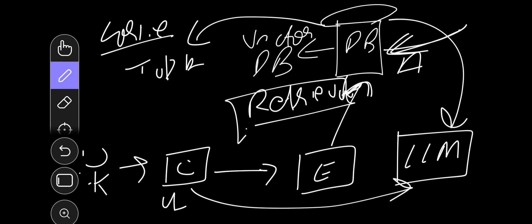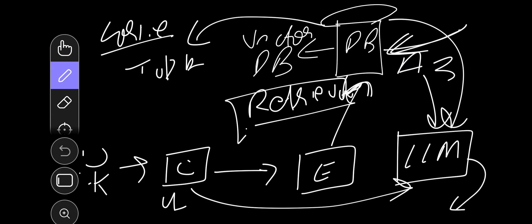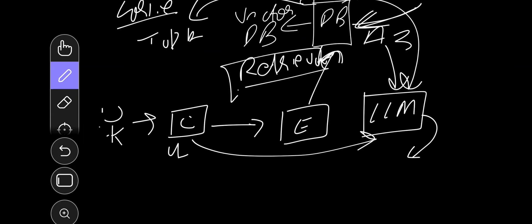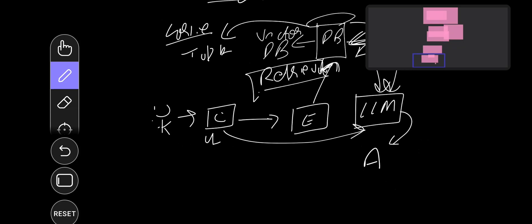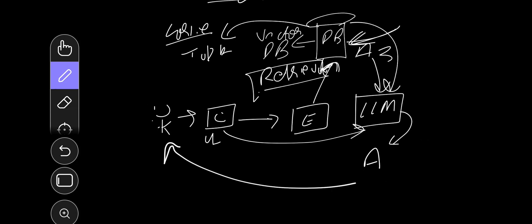Your LLM now has the query and the top three most cosine-similar results. From these, your LLM can generate an answer, which is given back to the user. The same embedder is also used by the data source side, since you need similarity matching throughout. That's how RAG architecture works in a nutshell.